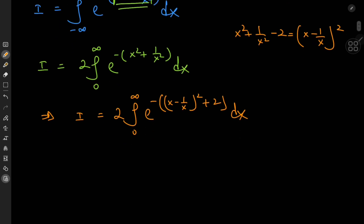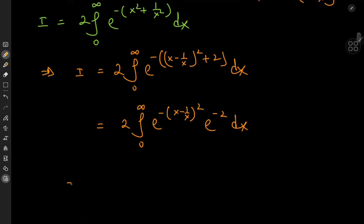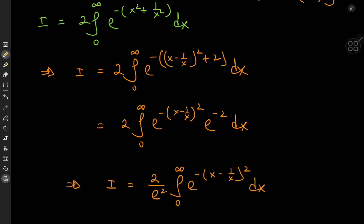Let me just break down the argument of the exponential function some more. I can write this as twice the integral from 0 to infinity of e to the negative x minus 1 by x squared, times e to the negative 2. Notice that you finally have e to the negative of something squared. And e to the negative 2 is just a constant, so this implies that the simplified version of i is 2 by e squared times the integral from 0 to infinity of e to the negative x minus 1 by x squared dx. But it's still a bit off in comparison to the actual Gaussian integral because we have this negative 1 by x thing as well.